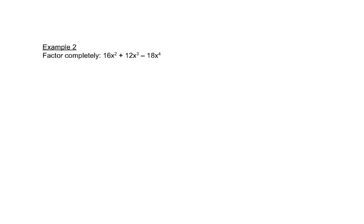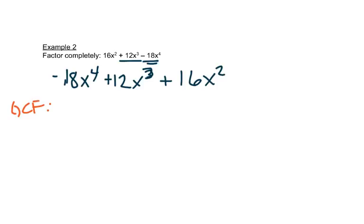Okay, so again, we need to ask ourselves, is this written in standard form? Well, it's not, because the biggest exponent is not first. So we'd want to write the negative 18X to the fourth first, and then the plus 12X to the third, and then finally the 16X squared. We want our exponents to get smaller from left to right. So now we ask ourselves, is there a greatest common factor? And there is. Two goes into all three of those numbers. And even more than that, we don't like this negative out in front, so we're going to do a negative two. And they all have X's.